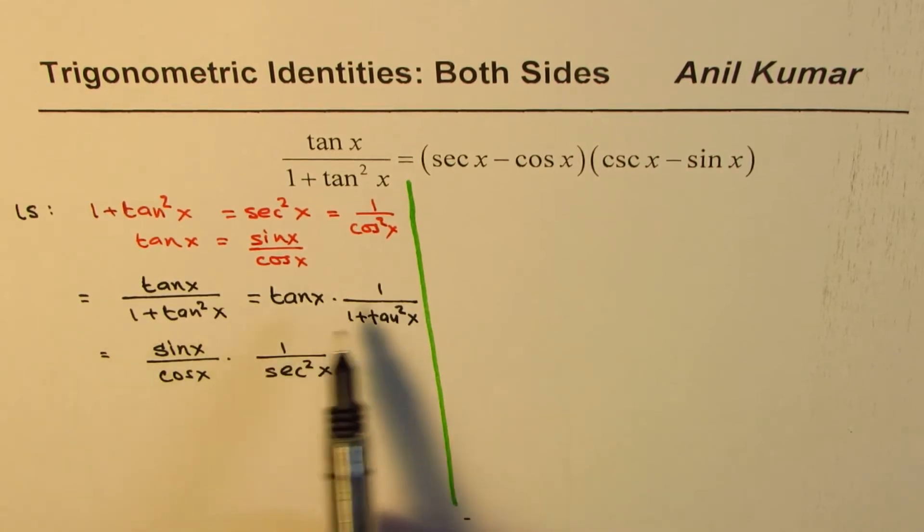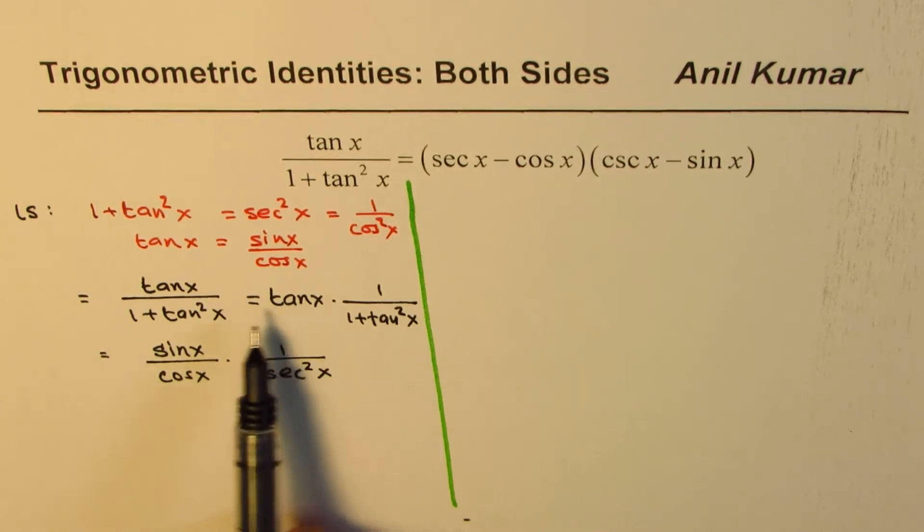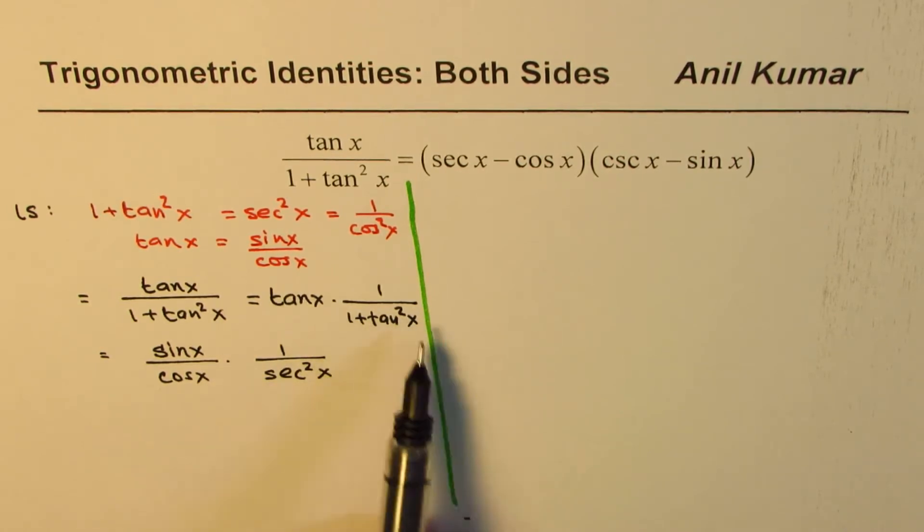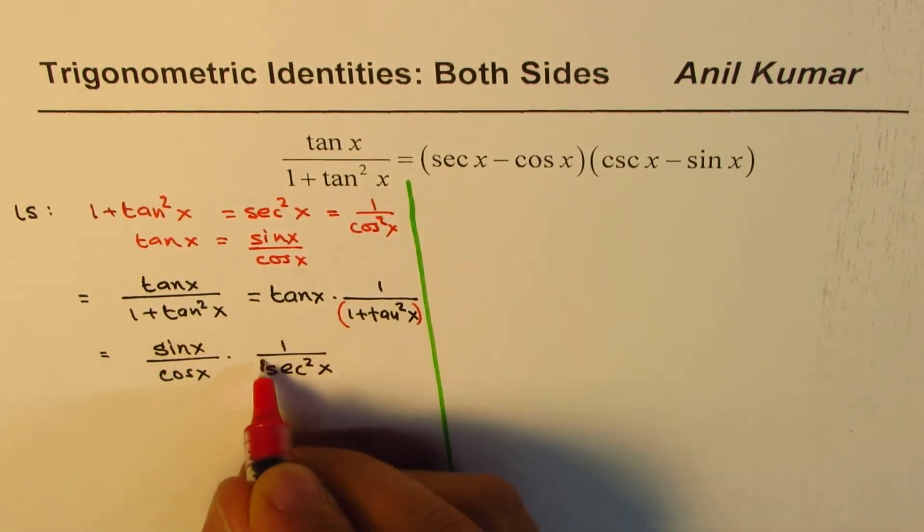So 1 plus tan square x, this part has been written as secant square x, and tan x is written as sin x over cos x. Now secant is 1 over cos.